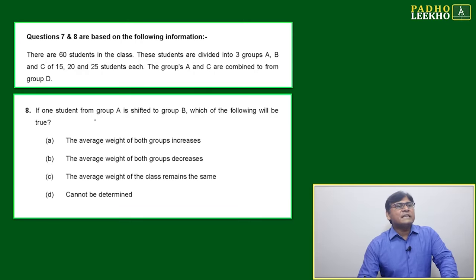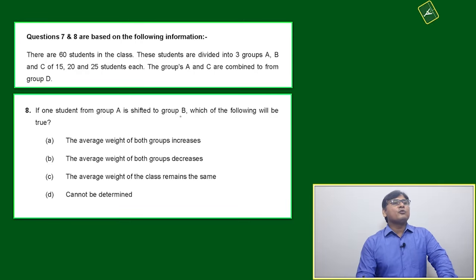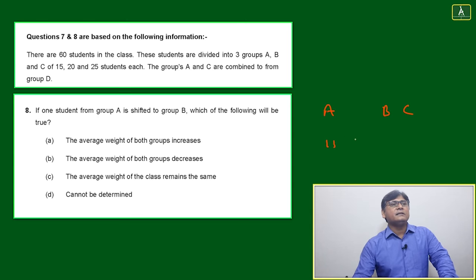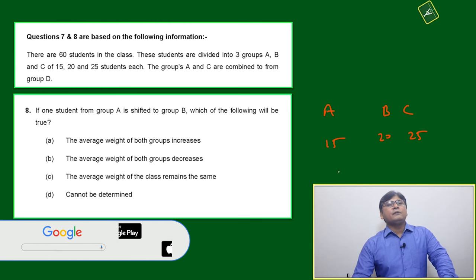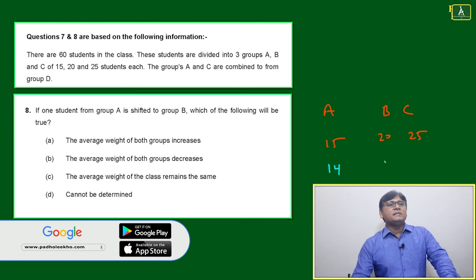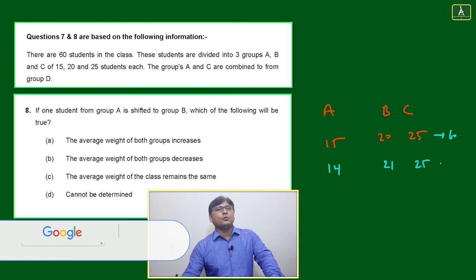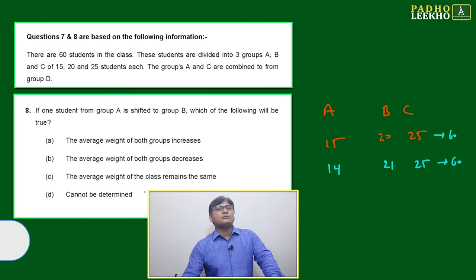Now, second question based on the same information: if one student from group A is shifted to group B, which of the following will happen? Here A, B, C is 15, 20, 25. If one from group A shifts, it will become 14, this will become 21, this will become 25. Total here also 60, here also 60.